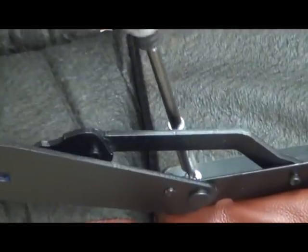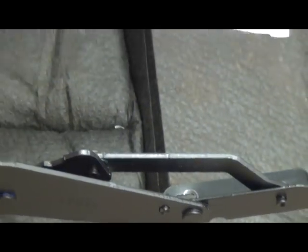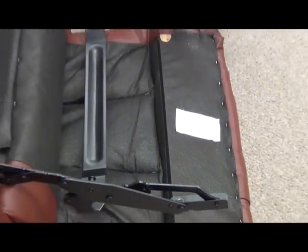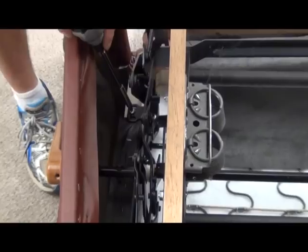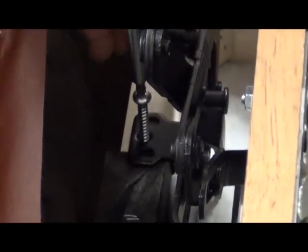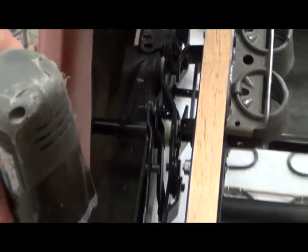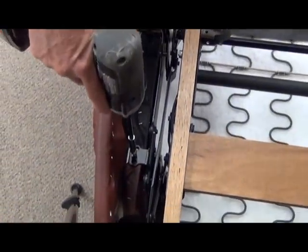Once you have removed all four screws from the kickout, close the mech for access to the remaining screws securing the mechanism to the recliner. Remove the four screws as shown to completely release the mechanism from the recliner.